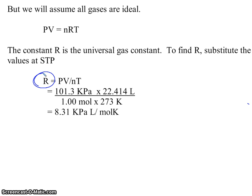Remember that pressure at STP is 101.3 kilopascals. Volume for one mole of gas at STP is 22.414 liters. The number of moles we're speaking about is one mole. And STP was zero degrees Celsius, which is 273K. So if I take the standard conditions, STP, I can solve for this constant called R, and it comes out to be 8.31 kilopascals liters per mole Kelvin. This is called the universal gas constant, and we can use this for any gas because we will assume that all gases are ideal.